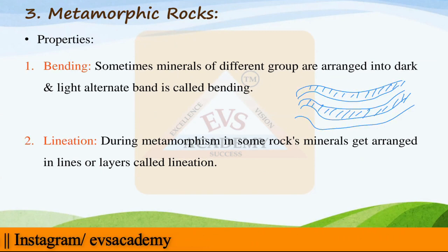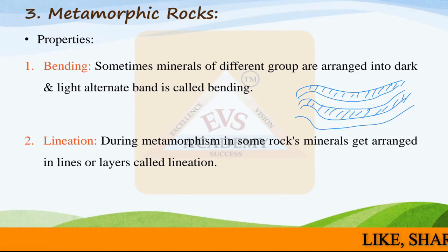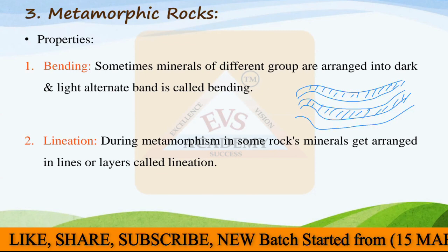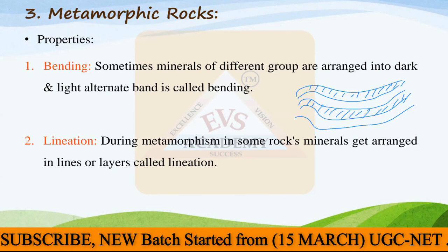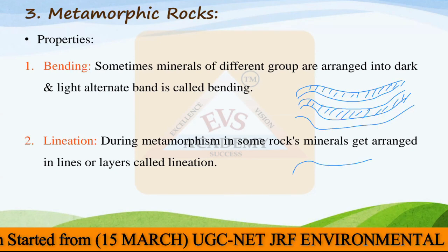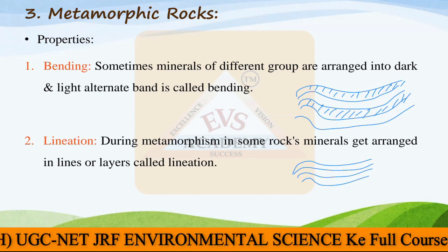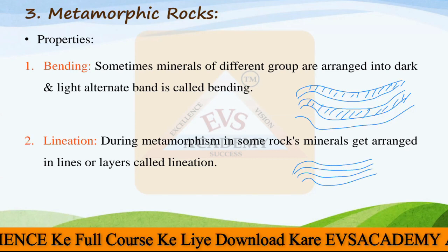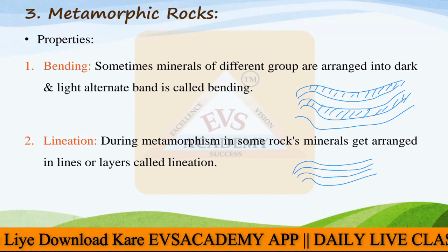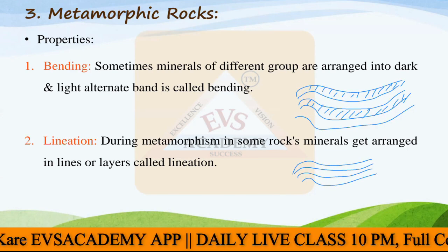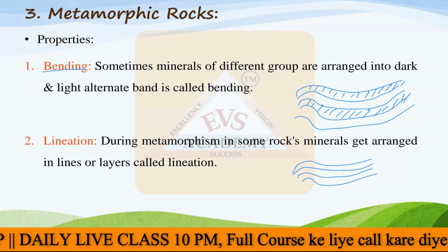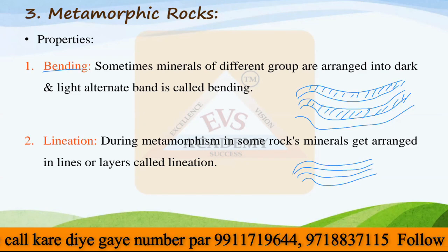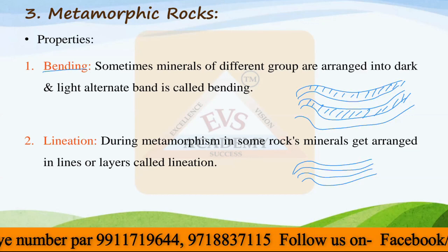The second property is lineation. During metamorphism, in some rocks, minerals get arranged in lines or layers. This is not about color — because of the minerals, different lines are created. One line of one mineral, one line of another mineral, one line of another — and all will look different. This arrangement is called the lineation property of metamorphic rock. Lineation is the linear formation or arrangement of different minerals visible in metamorphic rocks.